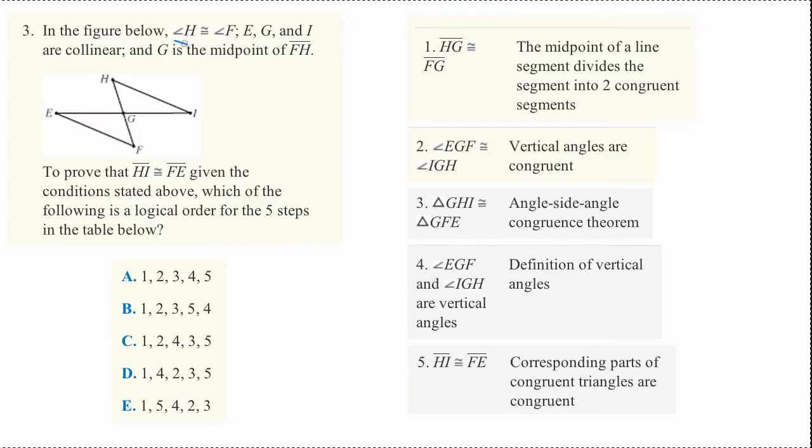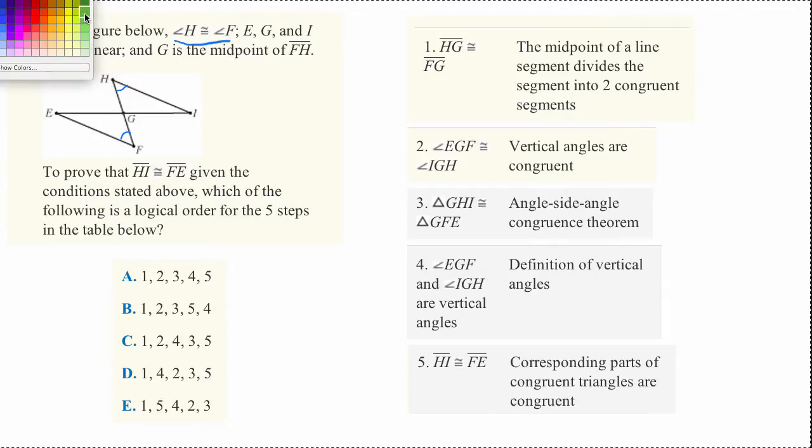In the figure below, angle H is congruent, has the same measure as angle F. E, G, and I are collinear together, so these are all on a line with one another.